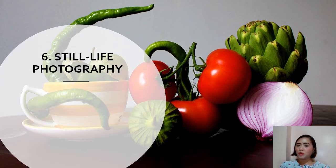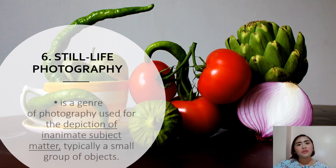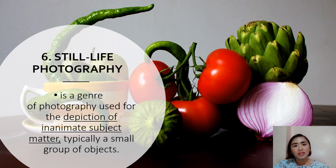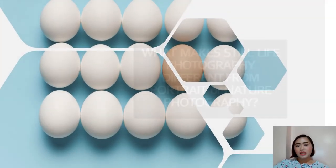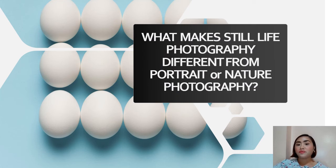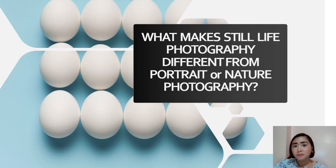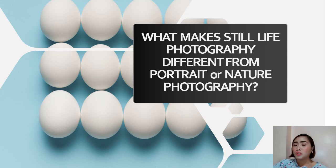The last type of photography is still-life photography, a genre used for the depiction of inanimate subject matter, typically a small group of objects. What makes it different from portrait or nature photography is that you have control over the lighting and the placement of subjects. For example, you cannot control the time and pause the setting of the sun for a sunset photo, but in still-life photography, you have full control because your subjects are inanimate.